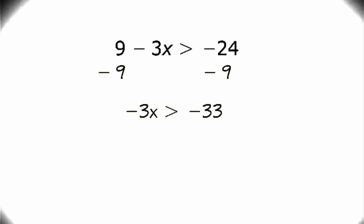Now, in order to isolate our x, we need to divide by negative 3 from both sides. So remember, we're dividing by a negative number across an inequality. So negative 3x divided by negative 3 is going to leave us with x. Negative 33 divided by negative 3 is 11. But now, instead of greater than, we need to flip our sign and we get x is less than 11. Excellent.